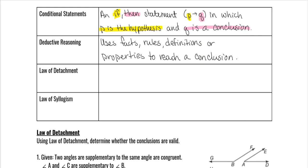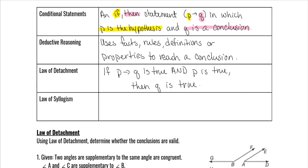The Law of Detachment states: if p → q is true and p is true, then q is true. This can be confusing, so let me use colors to help. If p → q is true, and then p is true, then q is also true.